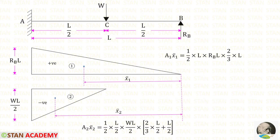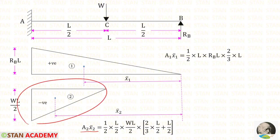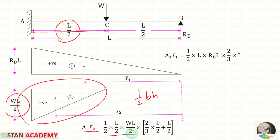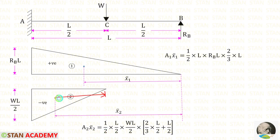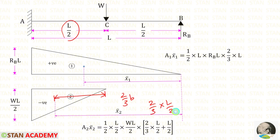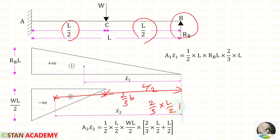Now let us find area 2 and X2 bar. This is also a triangle. The formula for the area of the triangle is half into B times H. Here the breadth is L by 2 and the height is WL by 2. The centroid distance is 2/3 into B, where the breadth is L by 2, so 2/3 into L/2. But since we are finding the deflection at point B, we have to add the remaining distance of L by 2. So for X2 bar we get that value.